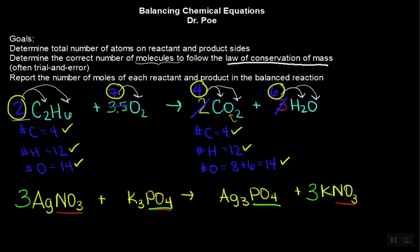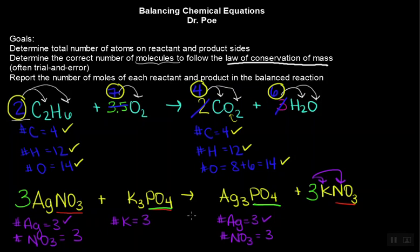I'm going to do this in purple. The number of silver on this side is three. The number of silver on this side is three. That's balanced. I'm going to treat the polyatomic ions as one thing because that's easier for me. You can treat them individually. The number of NO3 on this side is three. The number of NO3 on this side is three because this distributes to both parts. The number of potassiums on this side is three. The number of potassiums on this side is three. So that's balanced. And the number of phosphates on this side is one. The number of phosphates on this side is one. So this whole thing is balanced and follows the law of conservation of mass.